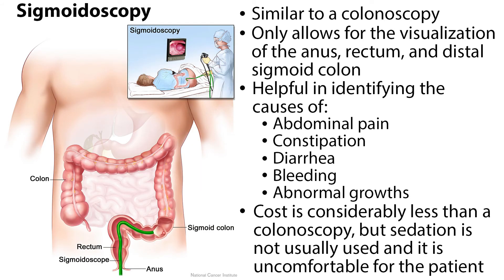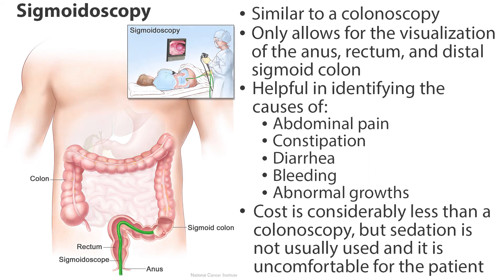A sigmoidoscopy is similar to a colonoscopy, but it only allows for the visualization of the anus, rectum, and distal sigmoid colon. It is helpful in identifying the causes of abdominal pain, constipation, diarrhea, bleeding, and abnormal growths. The cost is considerably less than a colonoscopy, but sedation is not usually used and it is uncomfortable for the patient. Most doctors recommend a colonoscopy as the best test for colon cancer screening, which should be done every 10 years starting at the age of 50.